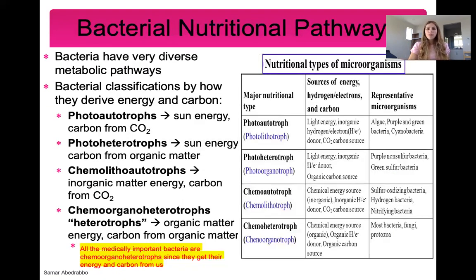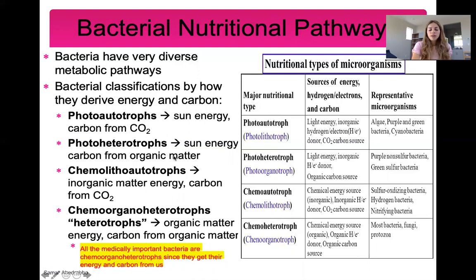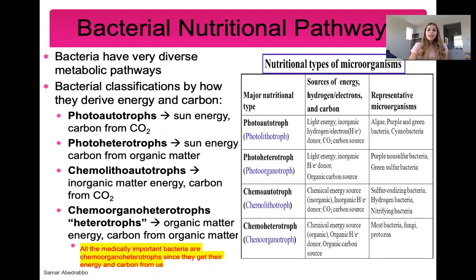Bacteria can have different nutritional pathways — different ways to get energy and a carbon source. We classify organisms based on whether they get energy from the sun or from organic/inorganic matter, and whether they get carbon from carbon dioxide or organic matter. Photo autotrophs get energy from the sun and carbon from CO₂. Photoheterotrophs get energy from the sun and carbon from organic matter. Chemolitho autotrophs get energy from inorganic matter and carbon from CO₂. Chemo organo heterotrophs — sometimes just called heterotrophs — get both energy and carbon from organic matter.